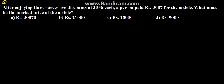The next problem: after enjoying three successive discounts of 30% each, a person paid rupees 3087 for an article. We need to find the marked price of the article. The options given are 30,000; 8,870; 21,000; 15,000; and 9,000 rupees.